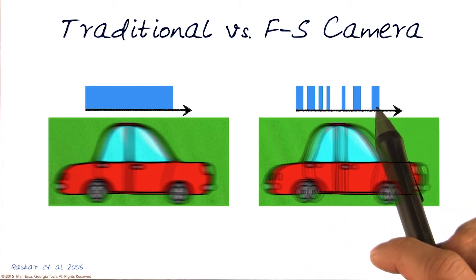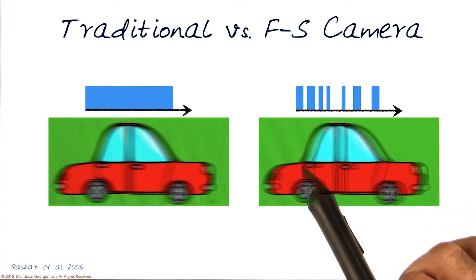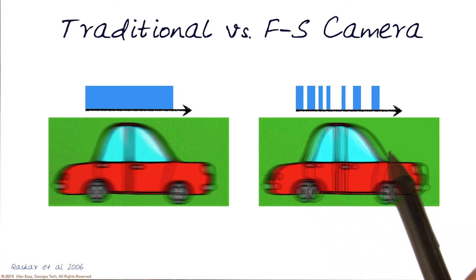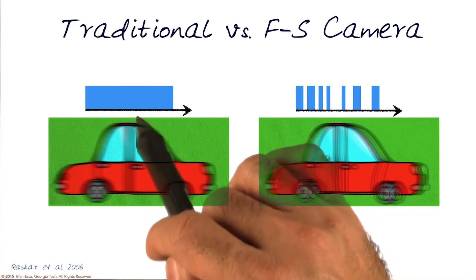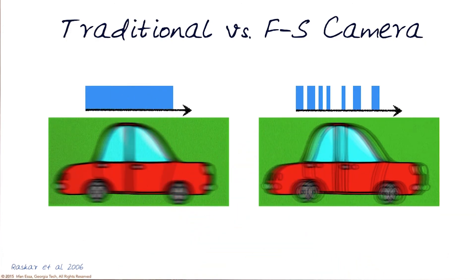If I know the code on how and when I open the shutter, I should be able to use this information to model the output I'm getting after all of this is accumulated or integrated. With traditional cameras, since I have no control over what happens in the middle, everything is blurred.